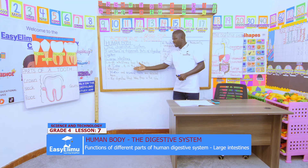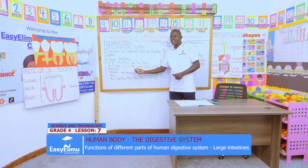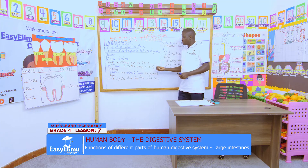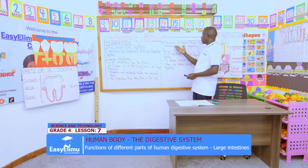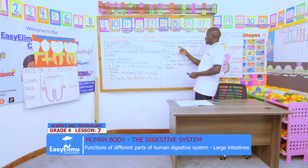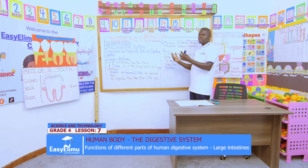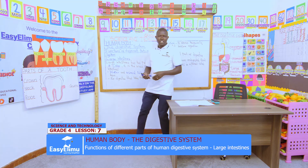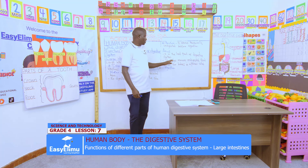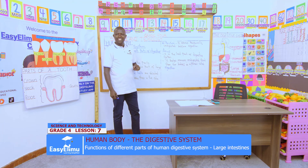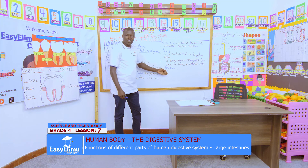In the upper part of the large intestine, which is the colon, water and mineral salts are absorbed. Then the undigested food goes down to the rectum, where it is stored temporarily, waiting to be taken away from our body — a process called egestion through the anus. And that is the end of digestion.